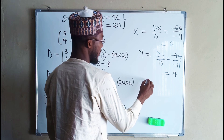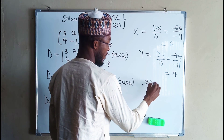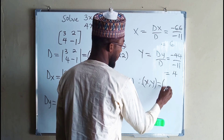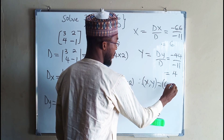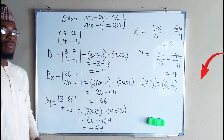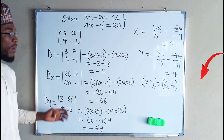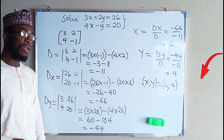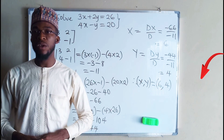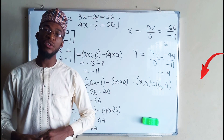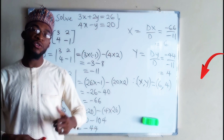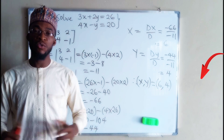Therefore, the values of x and y are: x equals 6 and y equals 4. This is how to solve a system of linear equations using matrices, which is Cramer's Rule. In my next video, I'm going to show you how to solve a system of simultaneous equations involving one linear and one quadratic. Don't forget to subscribe so that you won't miss anything.